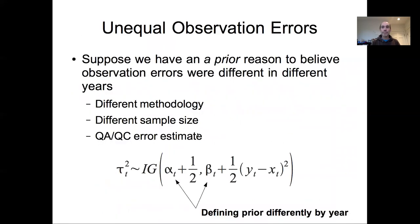Let's start with looking at a model where we have reason to believe that observation errors are different for different years, either because methodologies change through time, sample sizes change through time, or we're working with a data product that has specific QA/QC error estimates. We can feed that in on an observation basis.